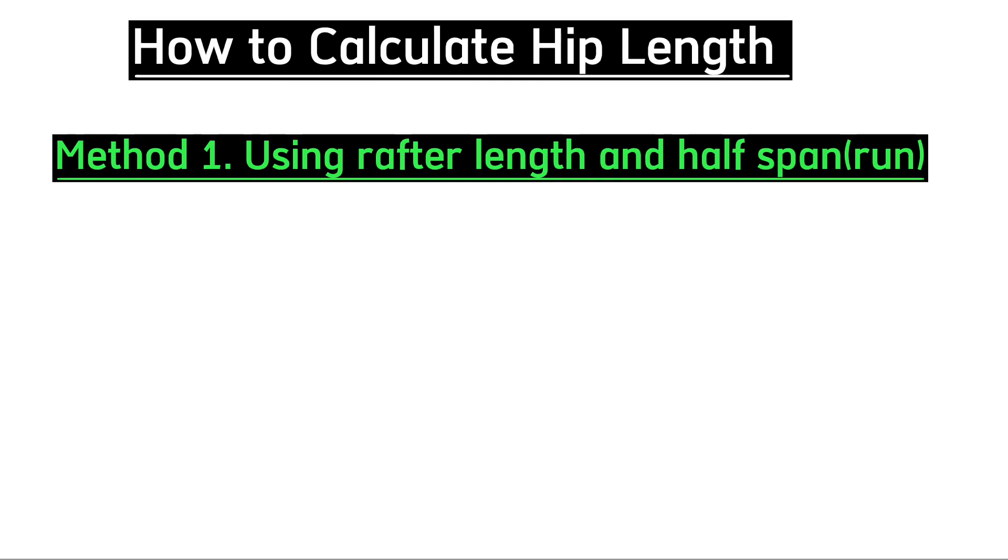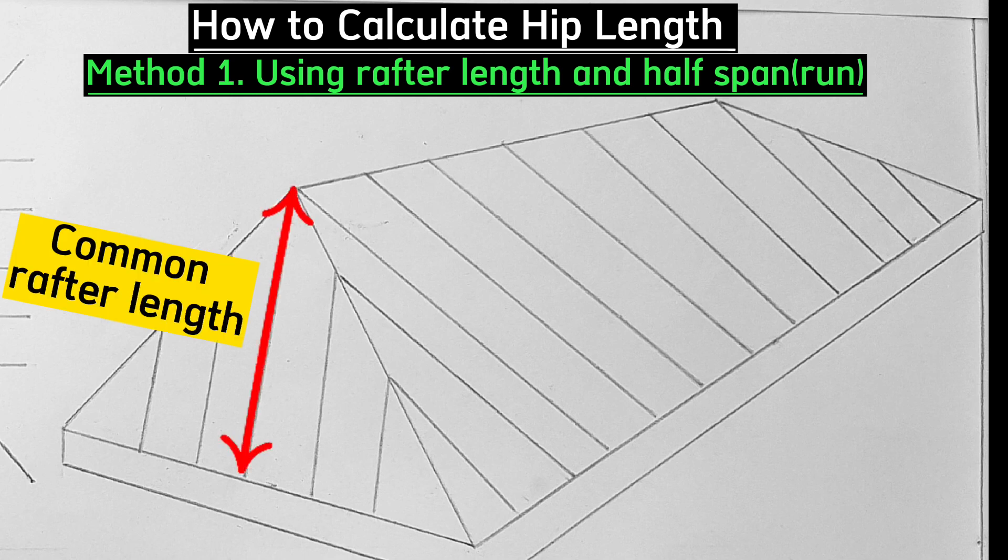Method one involves calculating hip length using rafter length and half span. Once you have these two measurements, the common rafter length and the half span, these make up two sides of a right-angled triangle.